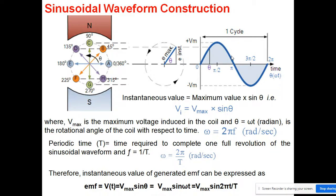After maximum, the value decreases. You can see that after the maximum it is decreasing, and once we reach 180 degrees the direction is just opposite — the magnetic field and velocity are parallel — so in this case the value becomes zero again.